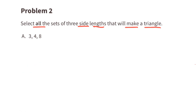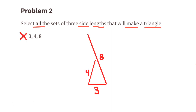For set A with side lengths 3, 4, and 8: 8 is the largest side length, so 3 plus 4 needs to be greater than 8. Since 3 plus 4 is 7 and 7 is less than 8, these three side lengths will not form a triangle.